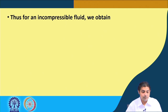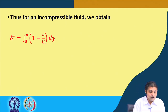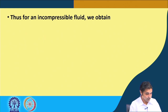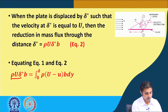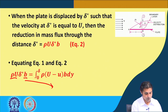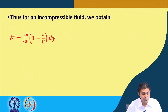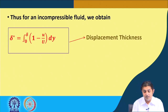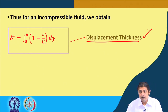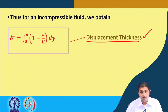For an incompressible fluid, we obtain delta dash equal to the integral from 0 to delta of (1 minus u/U) dy. This is the equation for the displacement thickness, and this is what you will use in numerical problems for finding the displacement thickness delta dash.